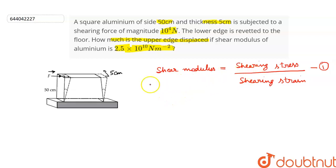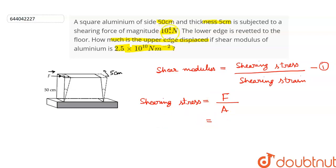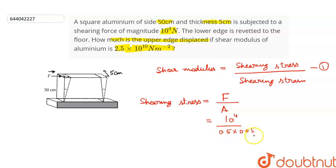First, let us calculate the shearing stress. Shearing stress will be equal to the shearing force F upon the area. The shearing force is given as 10 raised to the power 4 Newton, upon the area. The length of the slab is 50 cm and thickness is 5 cm, so area will be equal to 0.5 into 0.05. 50 cm can be written as 0.5 meters and 5 cm as 0.05 meters. So this gives us the shearing stress.